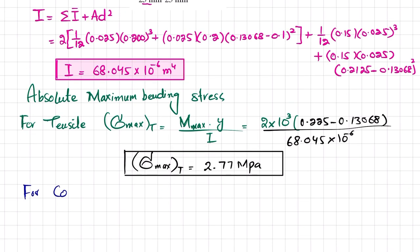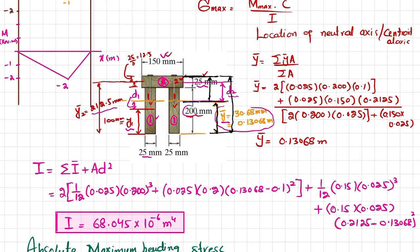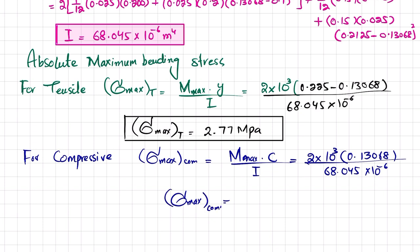For the compressive stress in the lower portion: sigma_max_compressive equals M·C / I, where C equals y-bar equals 0.13068 m. So sigma_max_compressive equals (2×10³ × 0.13068) / (68.045×10⁻⁶), which gives sigma_max_compressive equals 3.84 MPa.